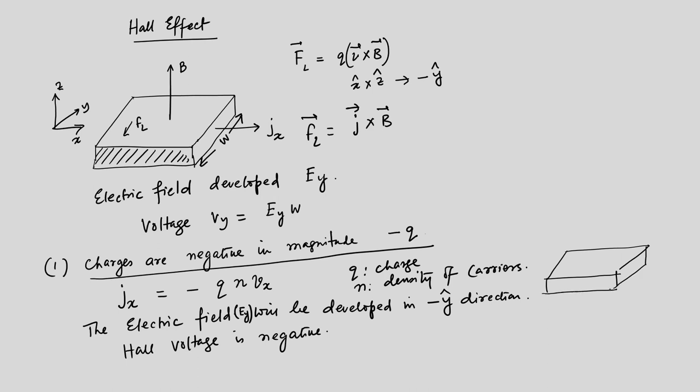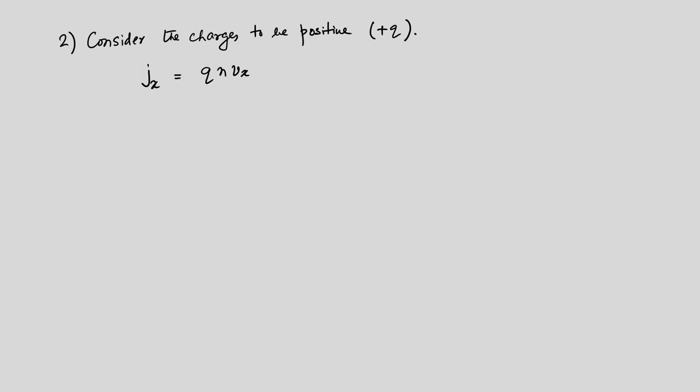For case one with negative charges, all the negative charges accumulate on one edge, and because of charge neutrality of the sample, the positive charges accumulate on the other side. This cannot go on indefinitely because the Lorentz force will eventually be completely balanced by the force due to the electric field that develops in the y-direction, and the motion of charges will stop.